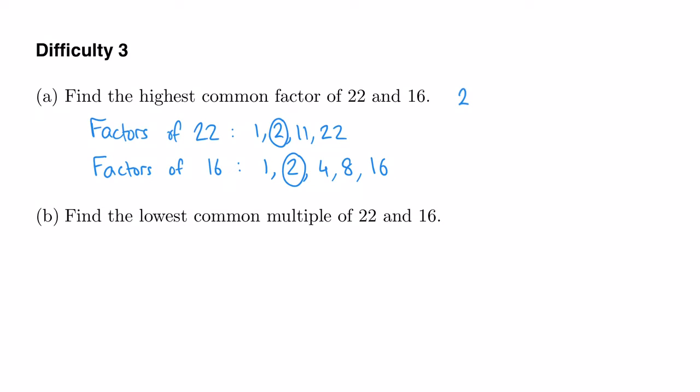So the multiples of 22 are 22, 44, 66, 88, 110 and so on. Now remember the multiples of a number are simply all the numbers in its times table.